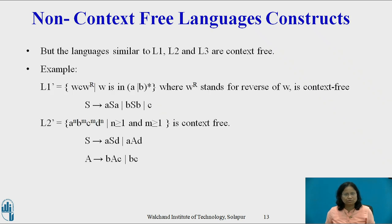However, languages similar to L1, L2, and L3 are context-free. For example, L1' = {wcw^R | w ∈ (a|b)*}, where w^R stands for the reverse of w, is a context-free language. L2' = {a^n b^m c^m d^n | n,m ≥ 1} is also a context-free language and the grammar for it is given.